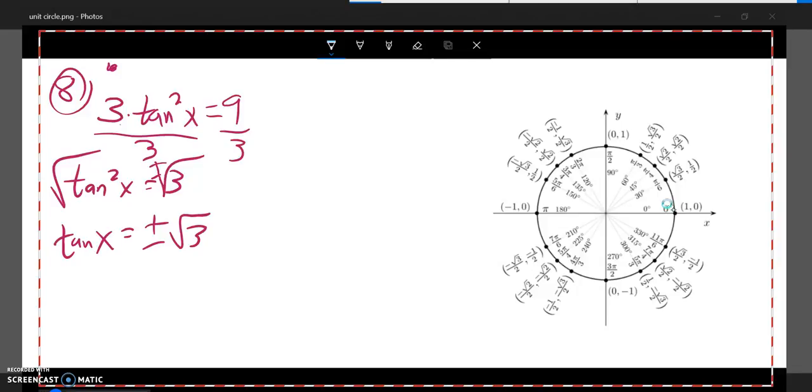So I'm looking for angles that would end up with a tangent of root three, and I know that tangent is y over x. So basically, I'm looking for things that have a root three in the y, because root three divided by two divided by half, the halves will cancel out.